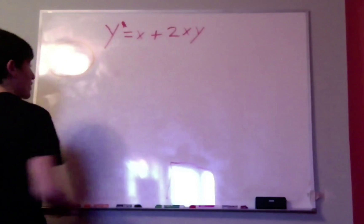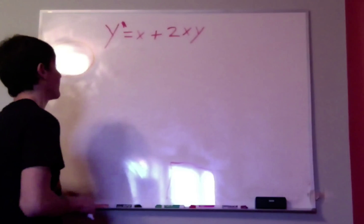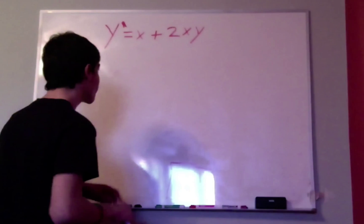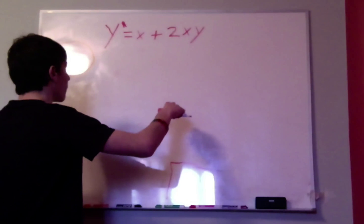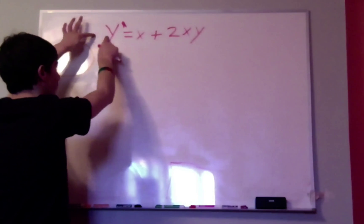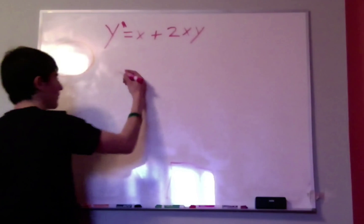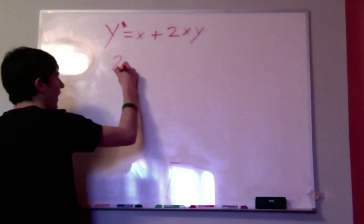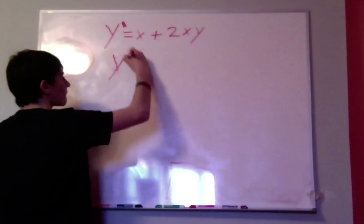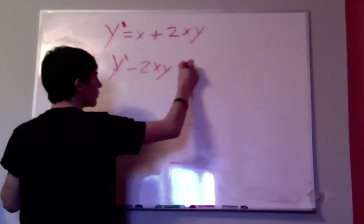The differential equation written above cannot be solved that way. That's why I wrote it as y prime instead of dy/dx, because it's not going to help us. First thing we're going to do is put this in standard form. Actually, first you divide out so that there is no coefficient on this term, but there already is no coefficient. So now we can subtract from both sides and put it in standard form. So we have y prime minus 2xy is equal to x.